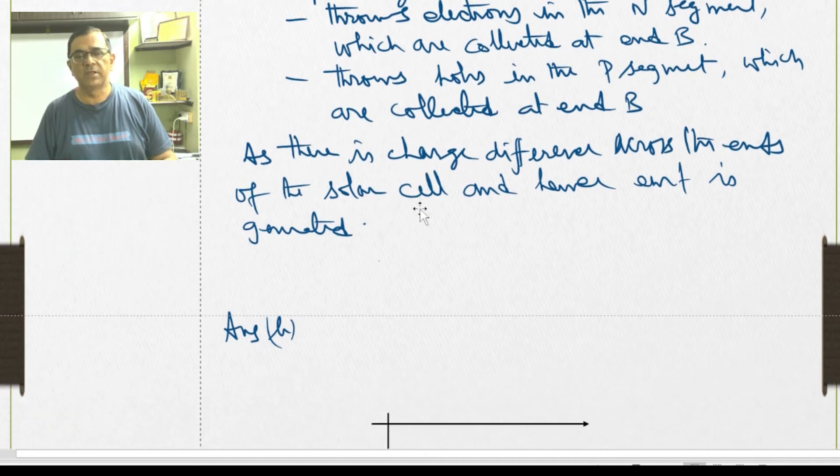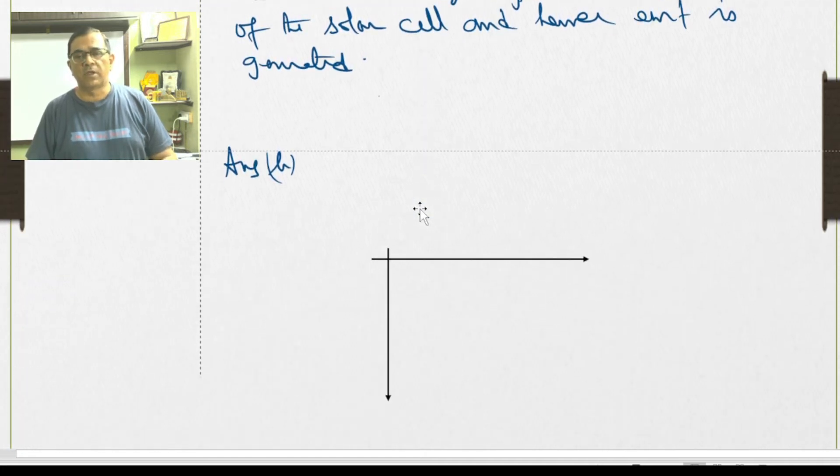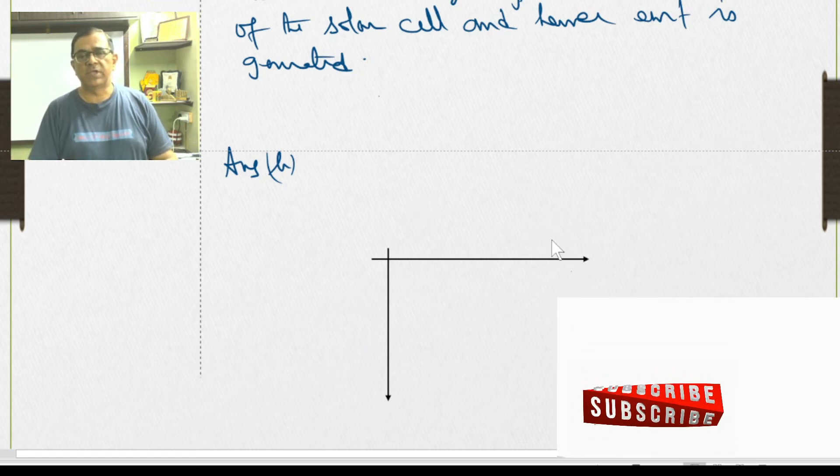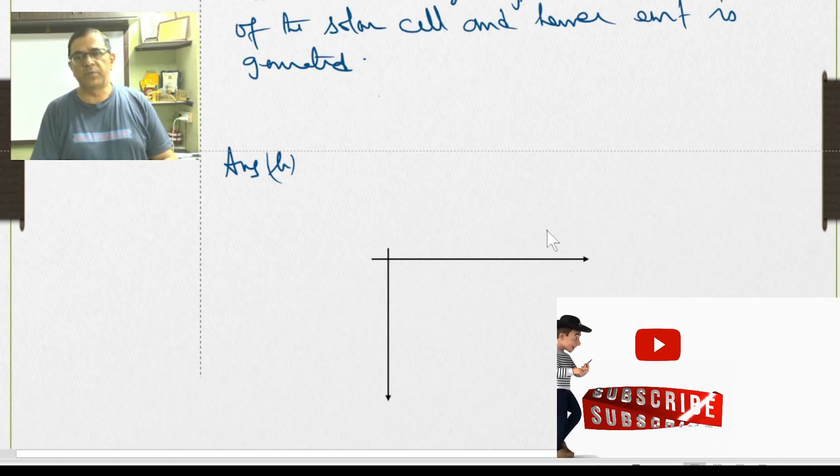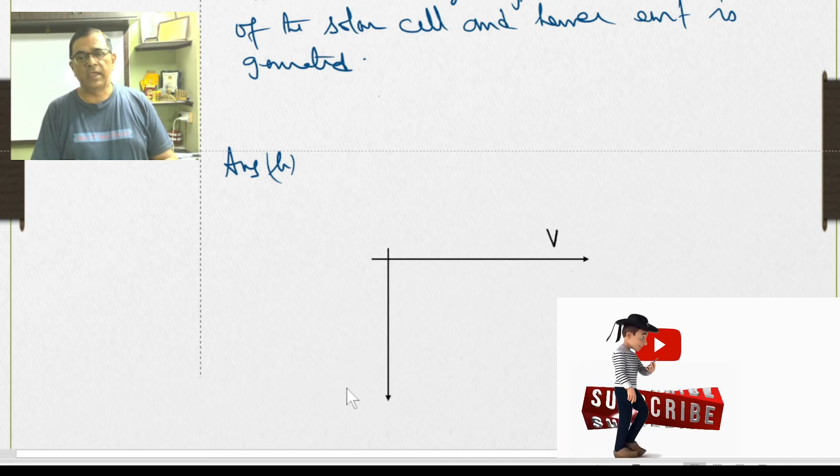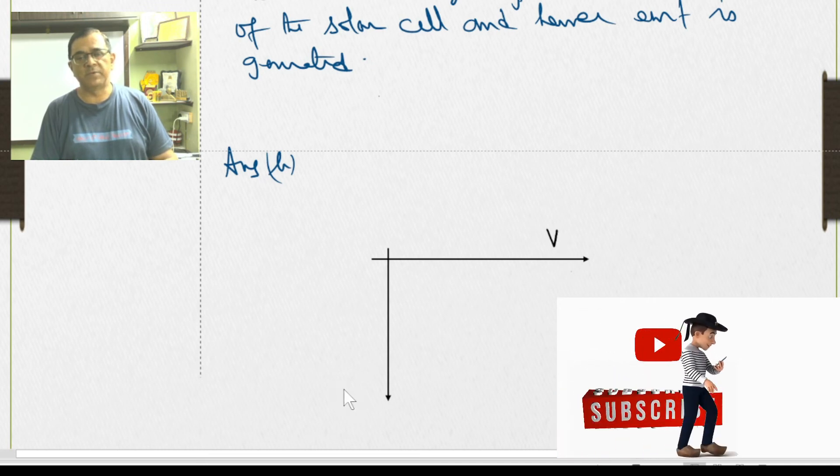Let's come to the IV part. We are supposed to draw IV characteristic for the solar cell. On the axis of X, we plot V and on axis of Y, in fact minus Y, we plot I.